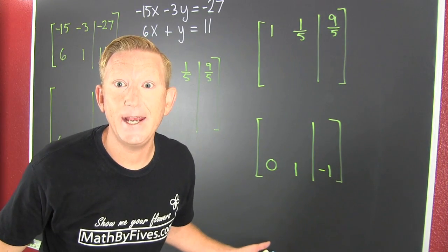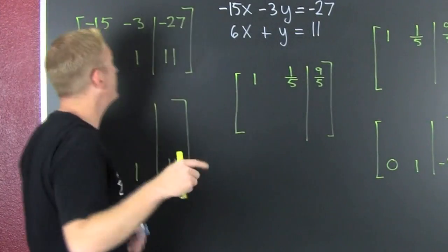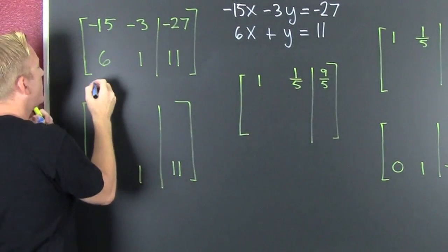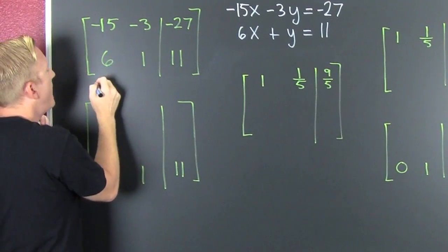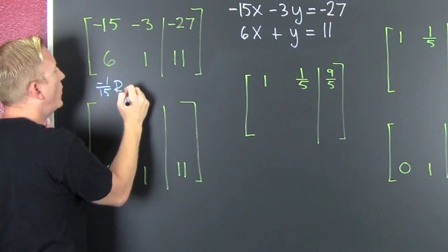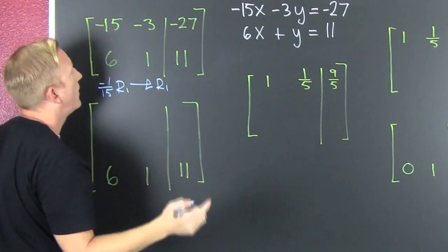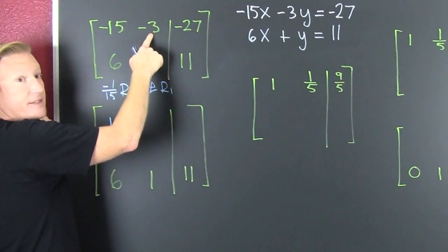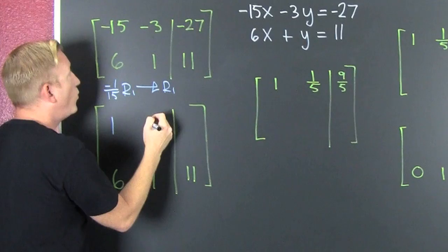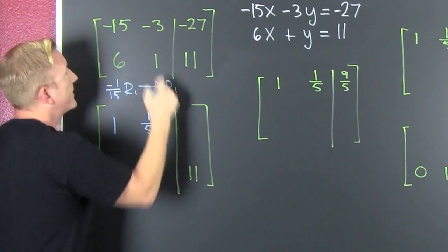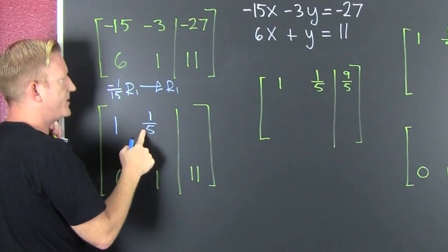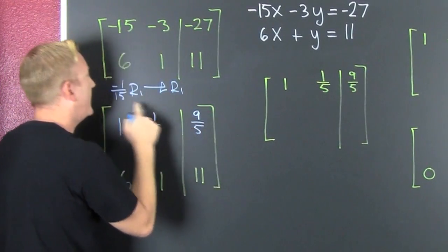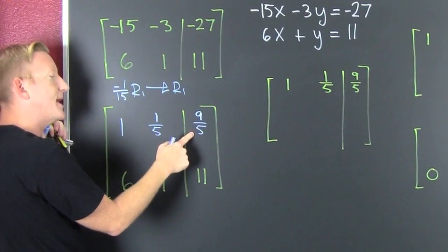Now that we have that game plan, we need to get a 1 right there. Then kill that 6. But to get a 1 right there, we're going to multiply by the multiplicative inverse. Minus 1/15, row 1. Put it back in row 1. So then I divide that by minus 15, and I get 1, the desired effect. I divide that by minus 15, and I get 1/5. Because 3 divided by 15 reduces down to 1/5, and it's positive because those have the same sign. And then I have 9/5. Because 27 divided by 15 reduces down to 9/5.